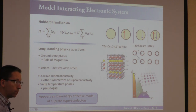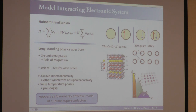Within the cuprates, one of the longstanding problems is the existence of a strange phase referred to as a pseudo-gap, and I'll talk a little bit about that later. In a lot of ways, it turns out that the Hubbard model actually contains most of the same phases. So it's really thought that it is a good representation of a low-energy effective model for the cuprates.